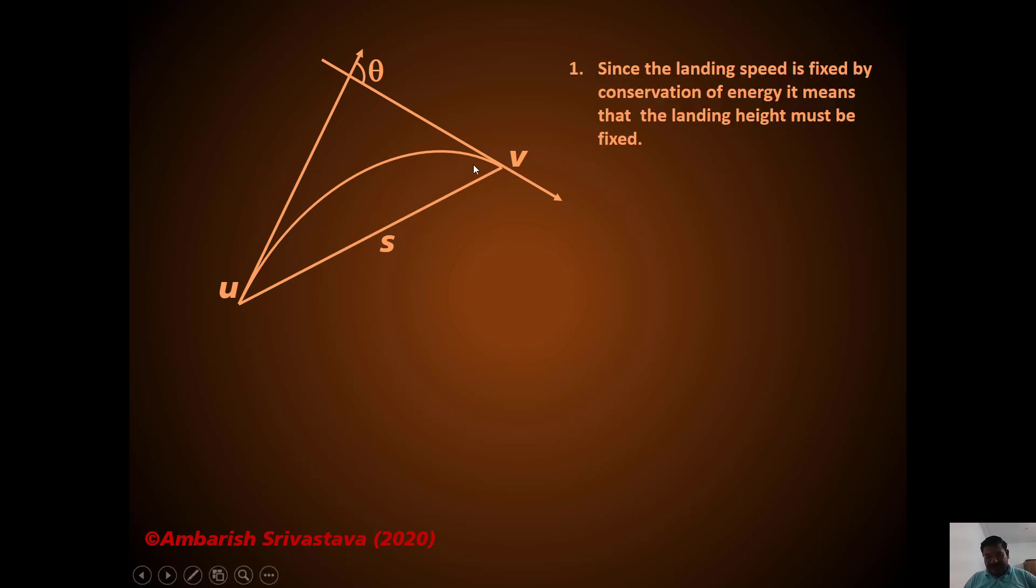So what can we say? Now since the landing speed is fixed and launching speed is fixed, that means change in potential energy must be fixed. So that means its height is fixed. So the landing height is automatically fixed just by U and V using the energy conservation equation, that is V² = U² + 2GH. So energy conservation fixes the landing height.